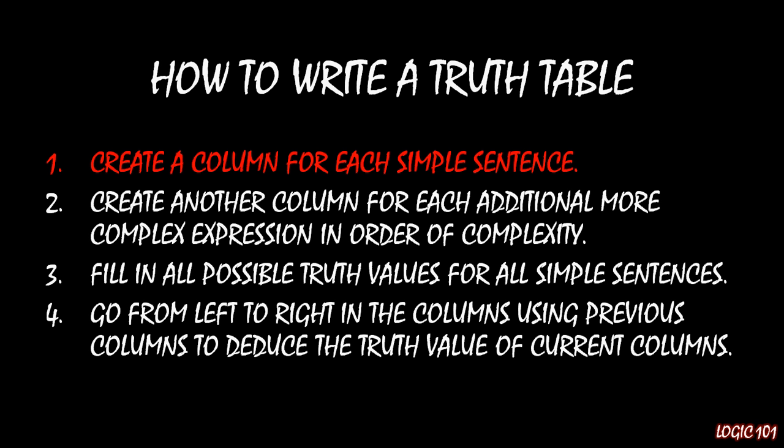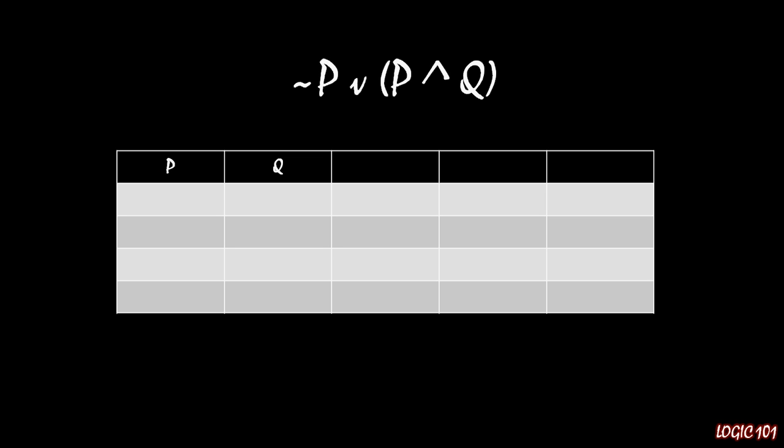So again, truth tables just have four steps. The first step is to create a column for each simple sentence. So we see that this bigger expression has only two simple sentences, P and Q, and so we start off the truth table by writing P and Q, each in their own individual columns.